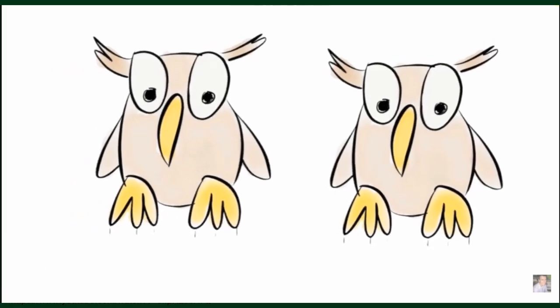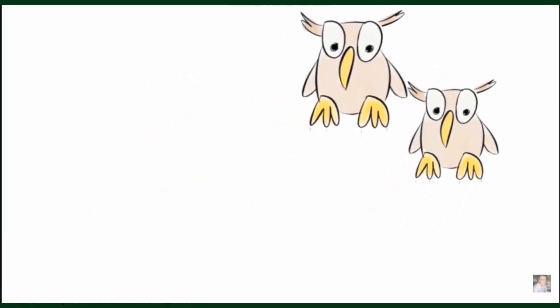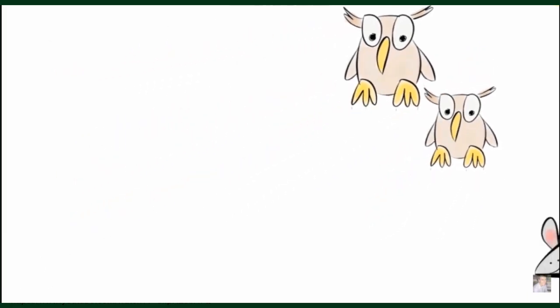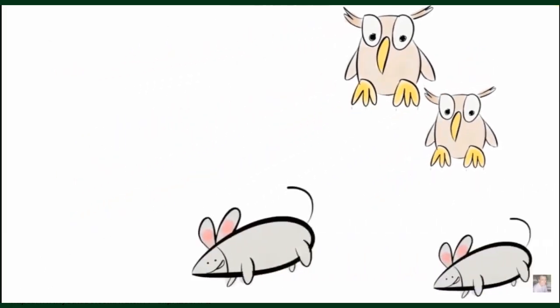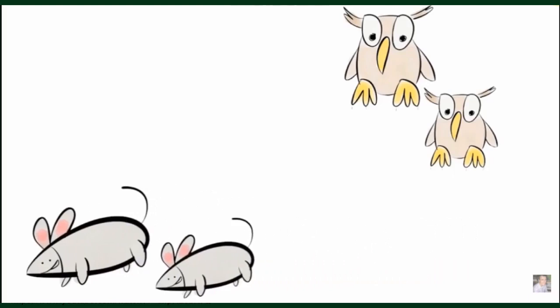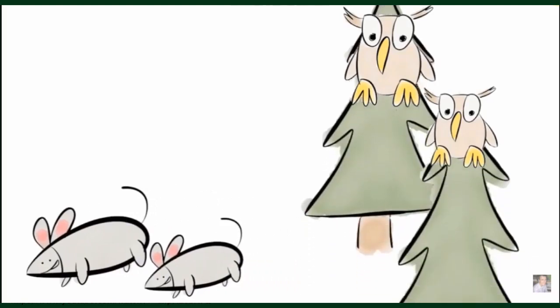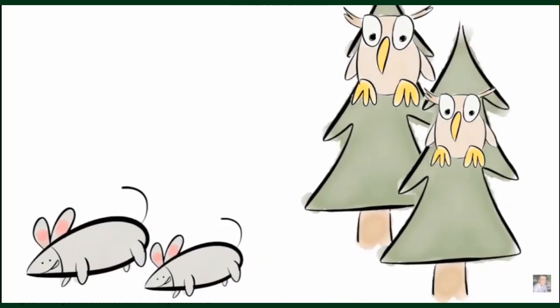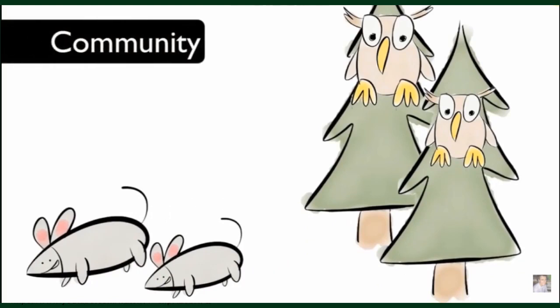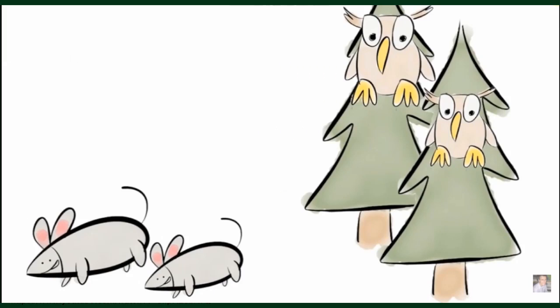Sometimes different populations live in the same area. For example, there could be a population of mice and a population of pine trees. Many populations in the same area are called a community. Within the community, populations interact.